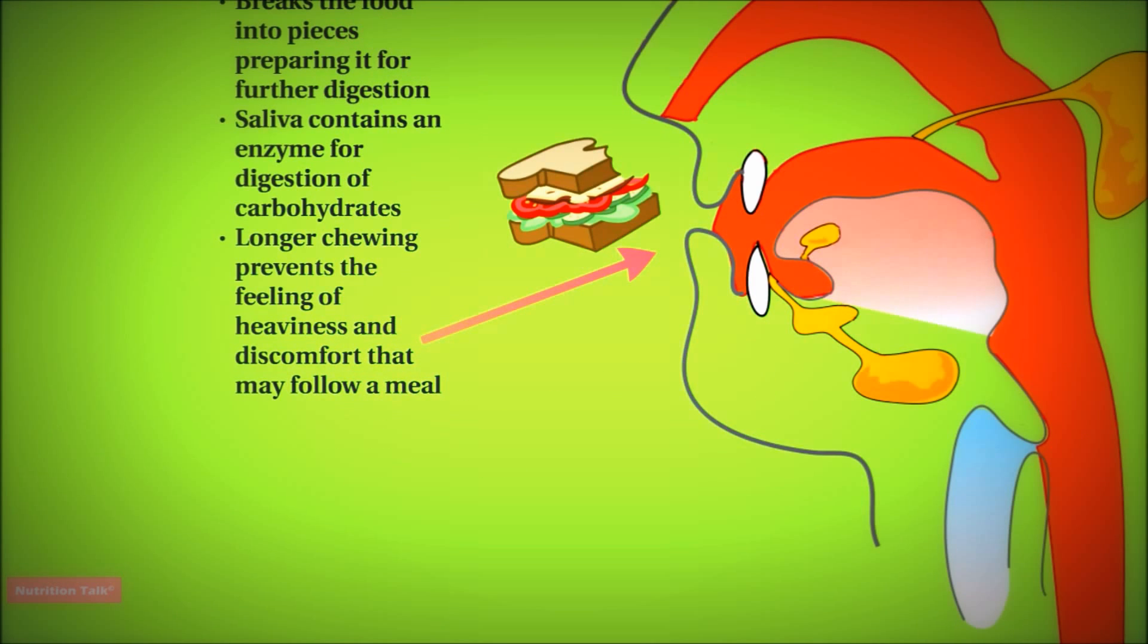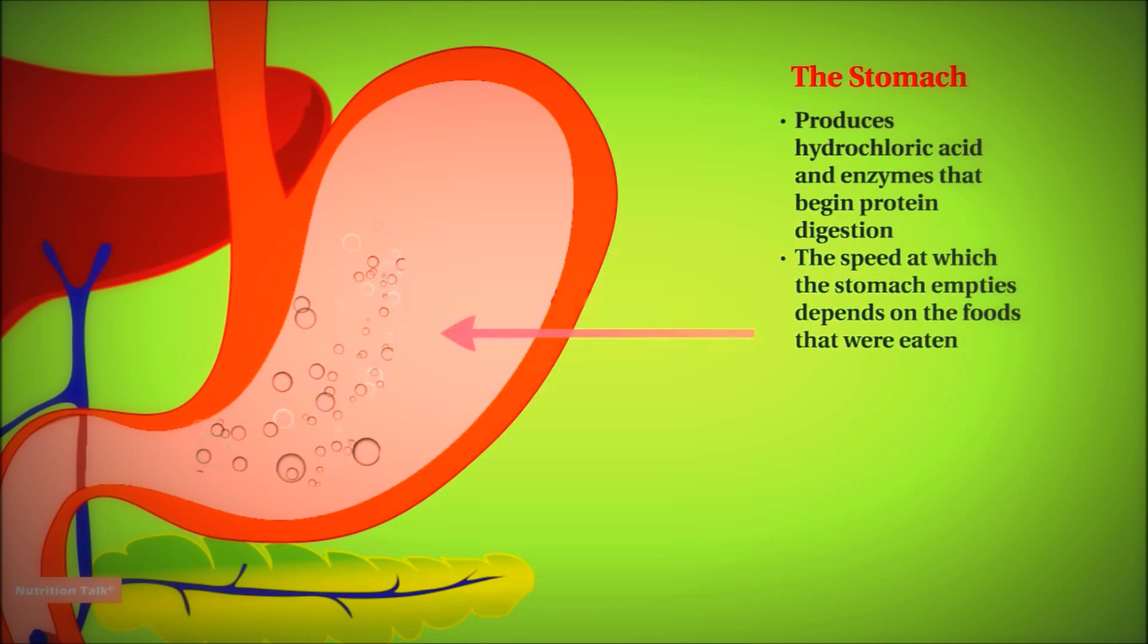So once we chew the food, it will travel down a pipe that connects the stomach to the mouth, which is called the esophagus, and the food will then enter the stomach. Now the stomach produces two important substances, which are the hydrochloric acid and enzymes, and these are responsible for the digestion of proteins. When the protein reaches the stomach, the digestion process can begin right away.